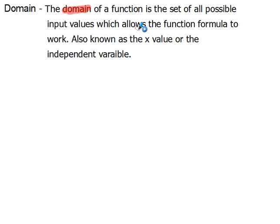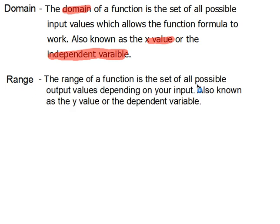Domain is also known as the x-value, which is also known as the independent variable. If you ever see the word domain, independent variable, or x-value, that's all talking about the same thing. The range of a function is the set of all possible output values depending on your input, also known as the y-value or the dependent variable. So domain is the input, range is the output.